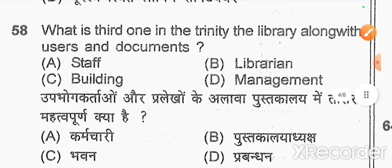What is the third element of the trinity of the library, along with user and documents? The option is A.